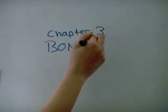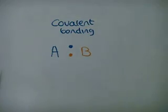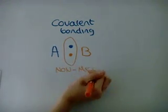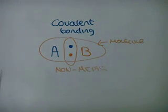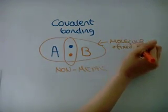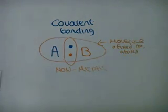Chapter 3. Bonding. Covalent bonding is when two atoms share a pair of electrons. This is between two non-metals and the particle formed is called a molecule. A molecule is a particle which contains a fixed number of atoms.